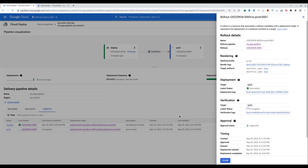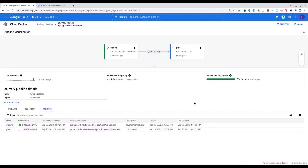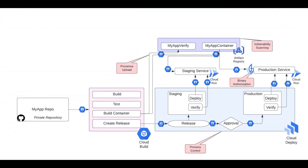Now we can see our approved rollout deploying to production. First the deployment job passes, followed by the verification job. We have now successfully completed making our change from commit all the way through production deployment. We've now shown a simple pipeline that allows you to iterate quickly without compromising on security. Some ways we've helped keep our pipeline secure: Cloud Build automatically provides build provenance information, Artifact Registry has built-in vulnerability scanning, Cloud Deploy provides process control for delivery, and Cloud Run integrates with binary authorization. And though it wasn't stated explicitly, all interactions between these systems were controlled via IAM policies.